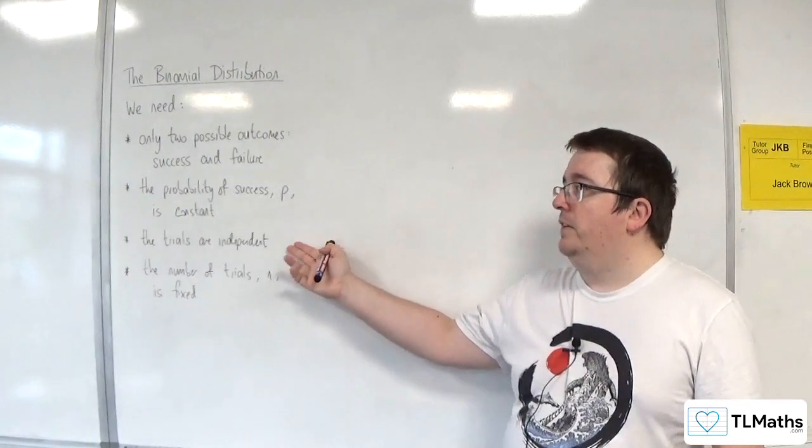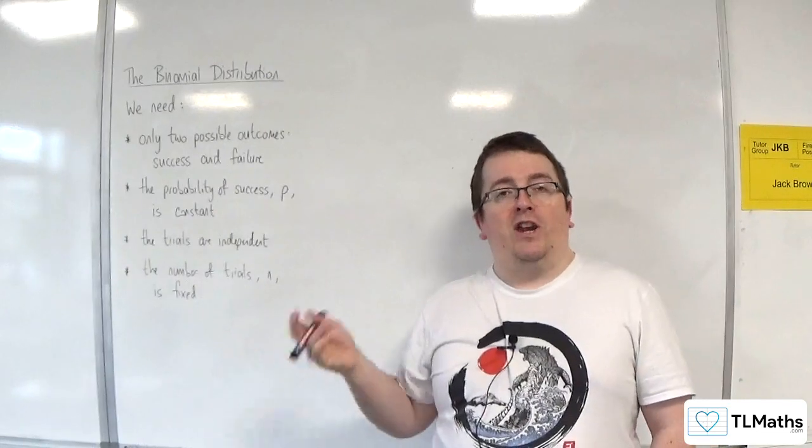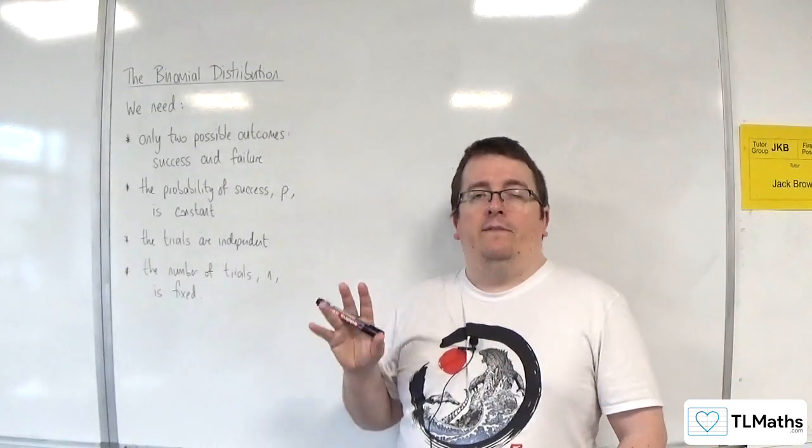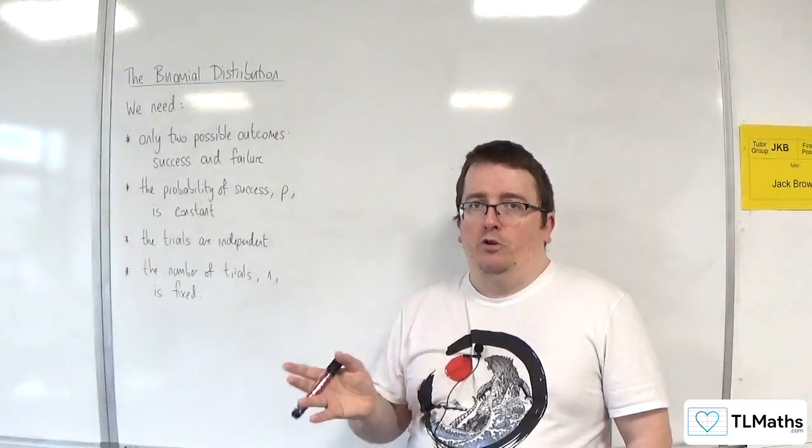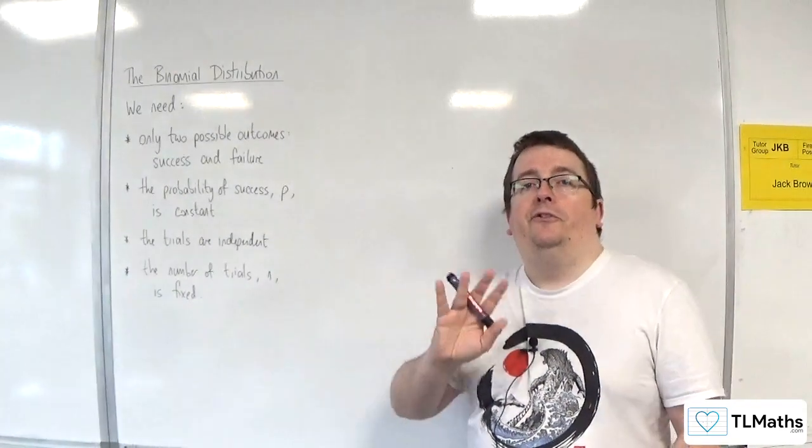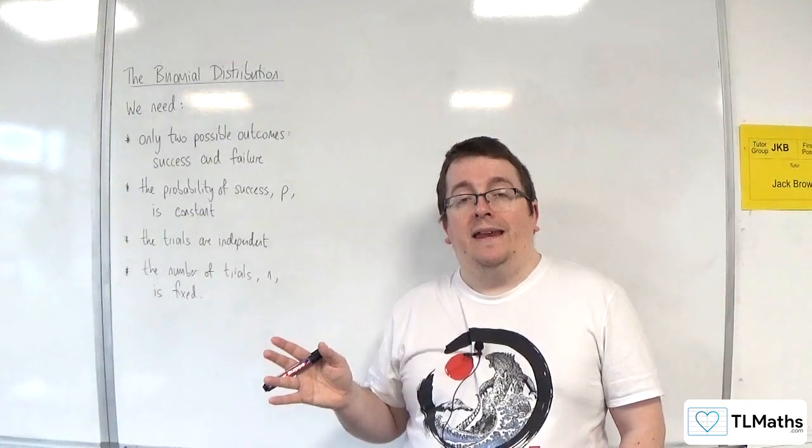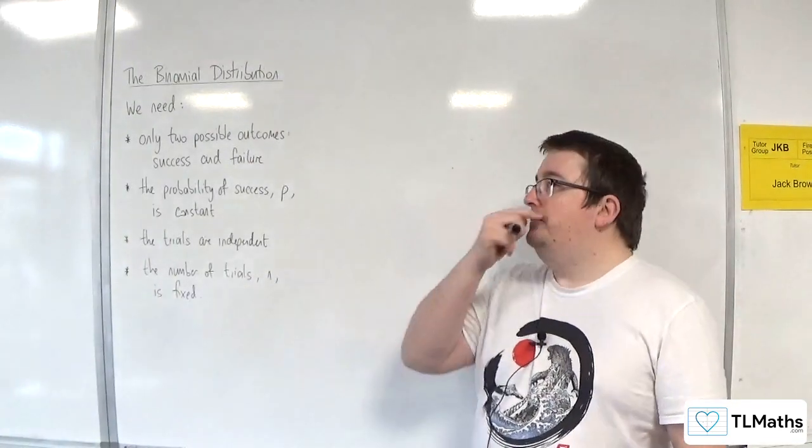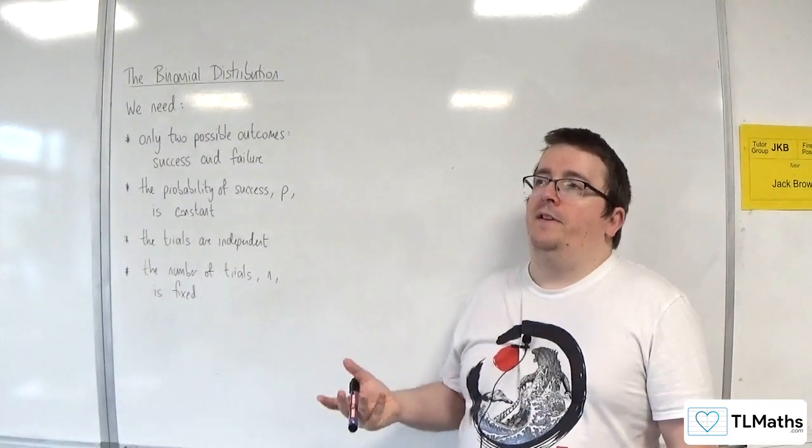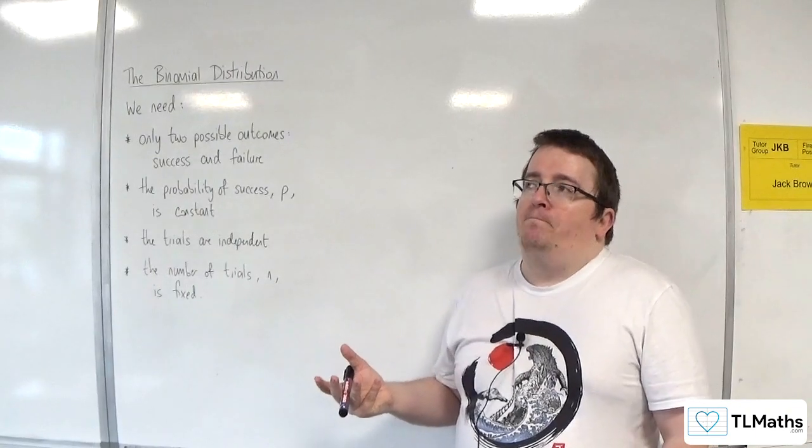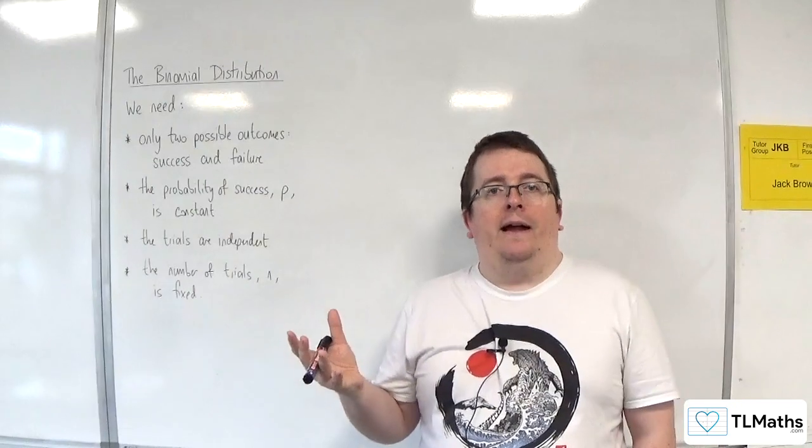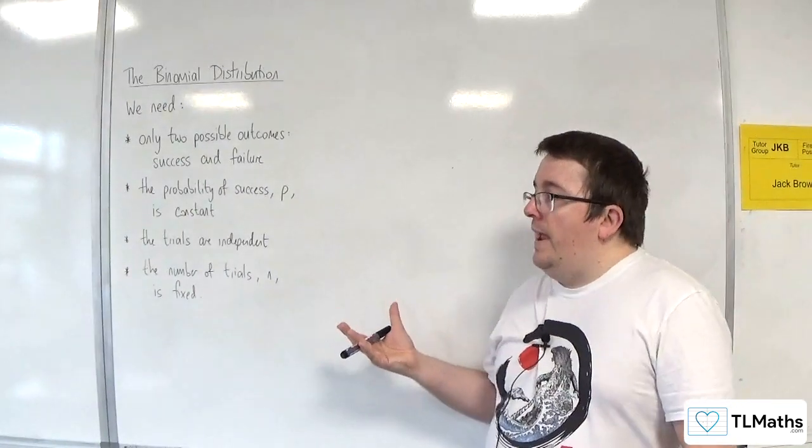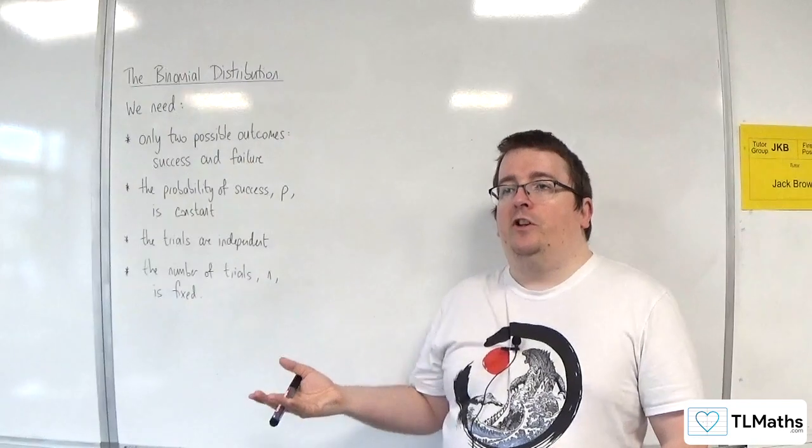That's always something to kind of keep an eye out for, especially in context problems. If you're trying to discuss, is the model likely to be binomial or not? Are the events likely to be independent? One case comes to mind if someone was doing something like throwing arrows at a target on a board, for example.